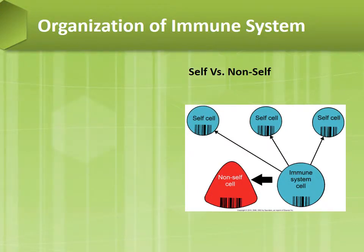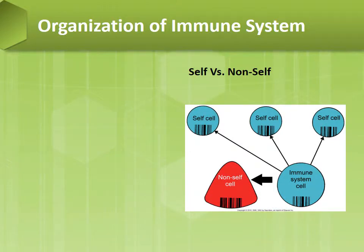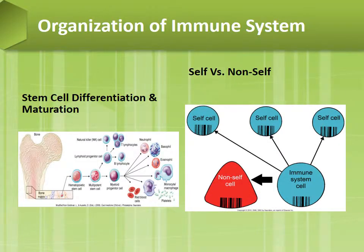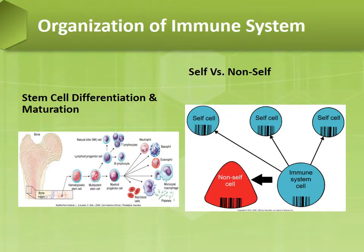The immune system will determine cells to either be self or non-self. The stem cell differentiation and maturation process initiates in the bone marrow as it progresses through the stages and differentiates into the type of cell it becomes.